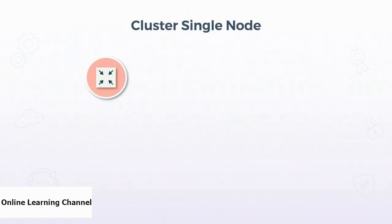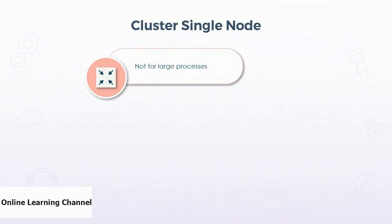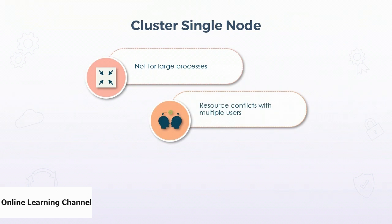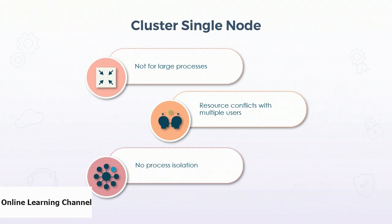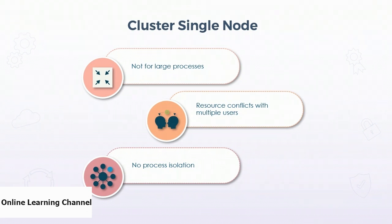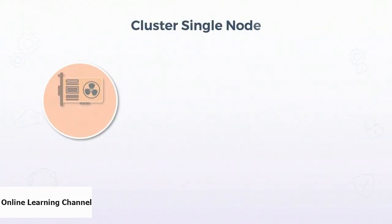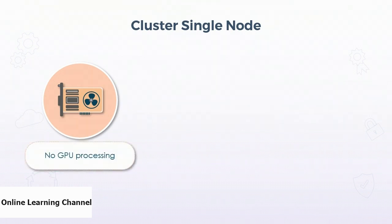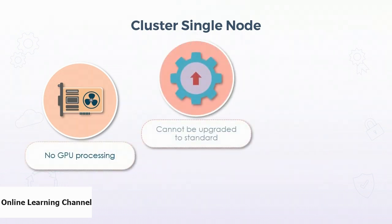Clusters typically scale their nodes when required, but there is a special cluster type called single-node. Single-node clusters are not meant for large processes — they're good for small, ad-hoc processes that don't require a lot of processing power. Single-node clusters shouldn't have multiple processes run on them because they don't offer process isolation of any kind. Some other limitations are that they're not allowed to use GPU processing for performance, they can't be upgraded to a standard cluster, and where standard clusters can scale their nodes, the single-node cluster will only run as many parallel processing threads as there are physical cores on the cluster.